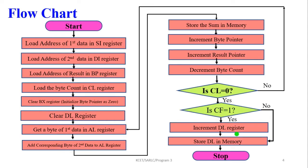This is the flowchart of multi-byte addition. First, load the address of the first data in SI register. Load the address of the second data in DI register. Load the address of the result in BP register. Load the byte count in CL register. Clear the BX register to initialize the byte pointer. Clear the DL register. Get the byte of first data into AL register, then add the corresponding byte of second data to AL. Store the sum in memory, then increment the byte pointer BX.